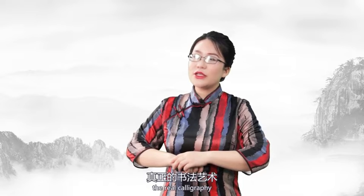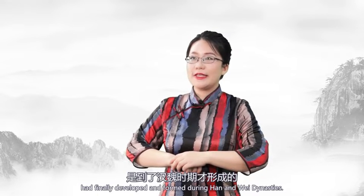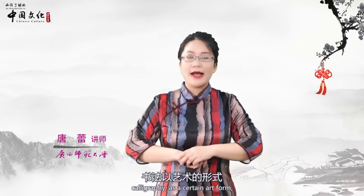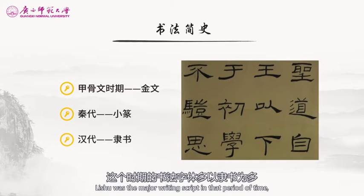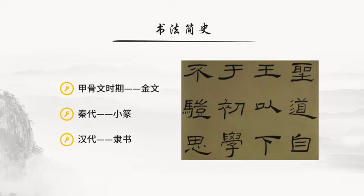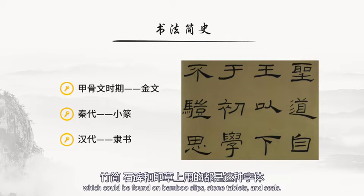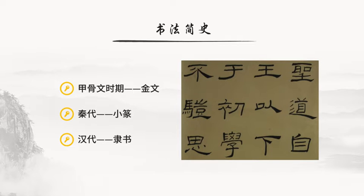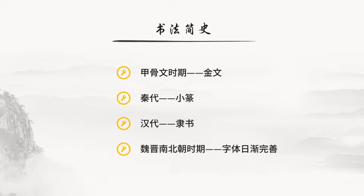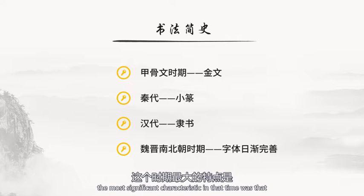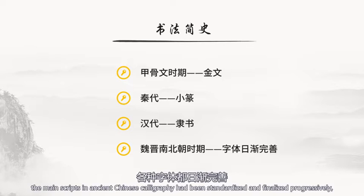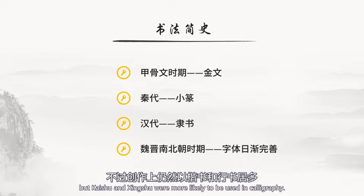由于创作还没有自觉地形成理论，也没有萌发，这一时期的汉字书写尚不能称之为艺术。严格来说，真正的书法艺术是到了汉魏时期才形成的。汉代是书法艺术的分水岭，从这个时期开始，书法以艺术的形式出现在了历史的舞台上。这个时期的书法字体多以隶书为主，竹简、石碑和印章上用的都是这种字体。